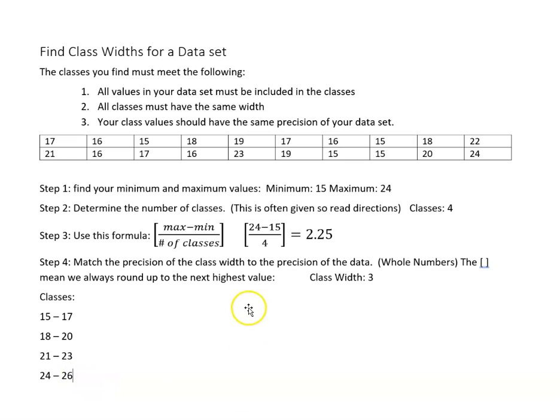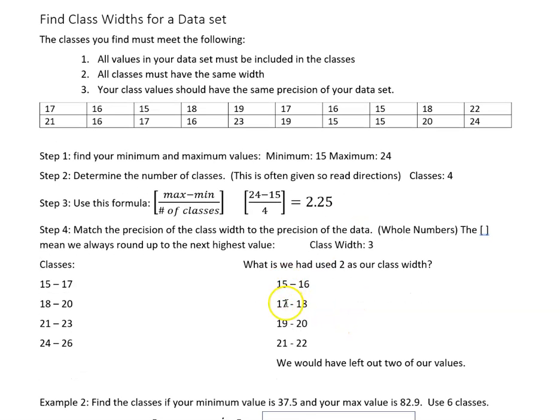What would happen here if we had used 2 as our class width, if we had rounded down to 2? We would have had 15, 17, 19, 21, and then we would have gotten 16, 18, 20, 22, and our values 23 and 24 would not have been included in our classes.